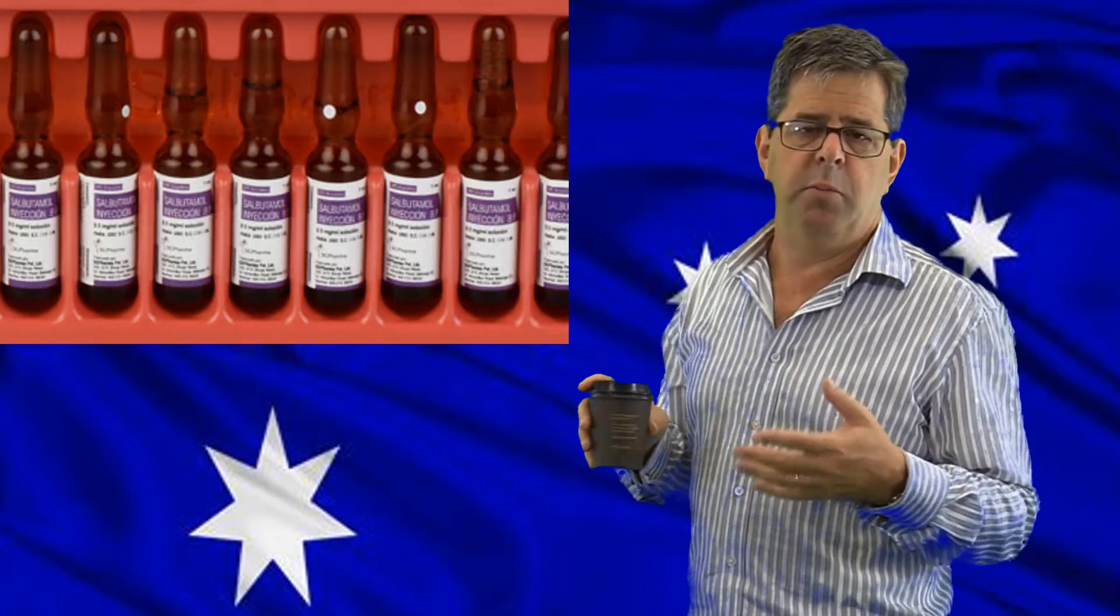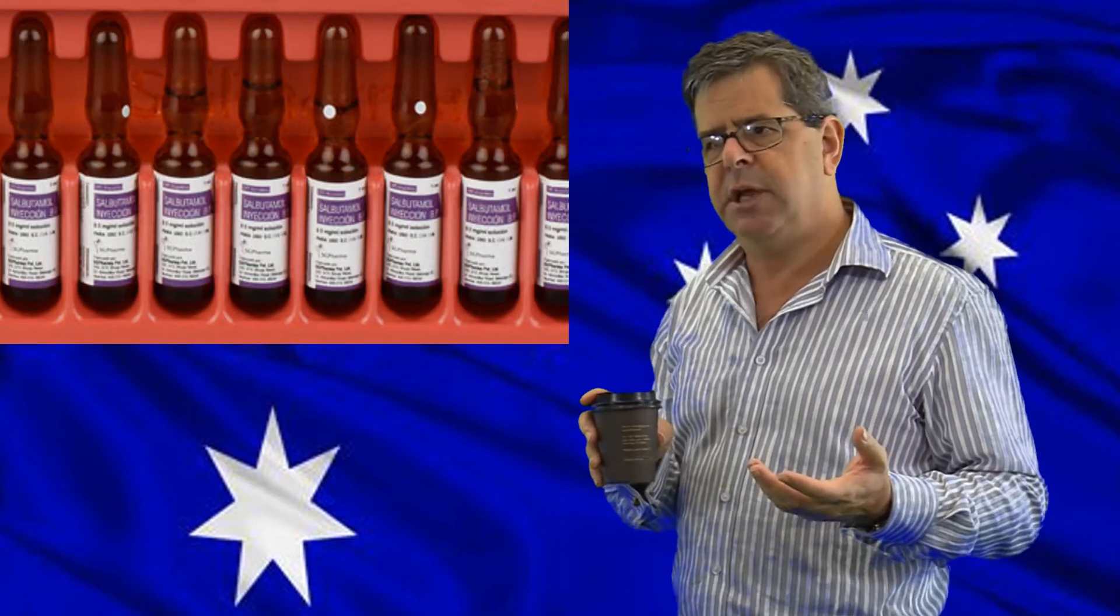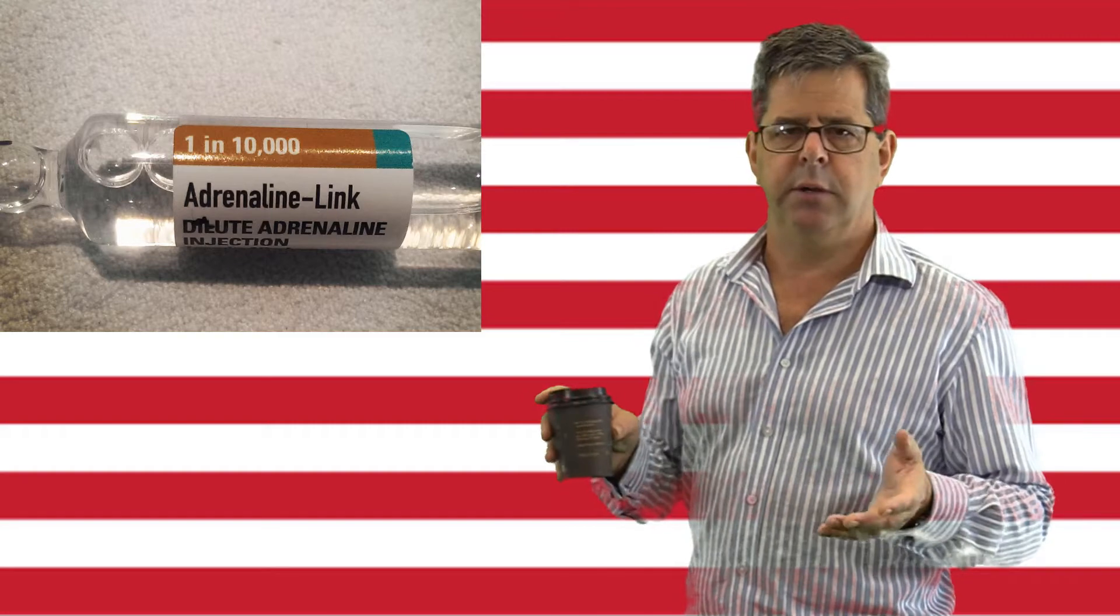Salbutamol infusion. Well, in Australia, we would give a salbutamol bolus, 4 micrograms per kilo over about 10 minutes, and then go on to an infusion. In the United States, of course, they would use an epinephrine or adrenaline infusion.